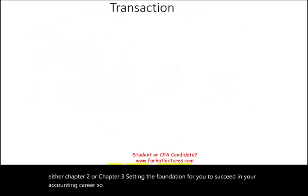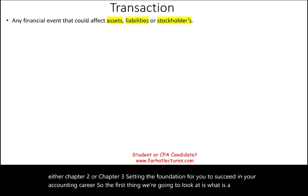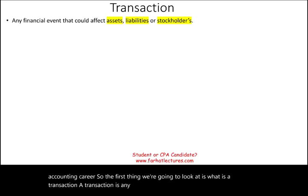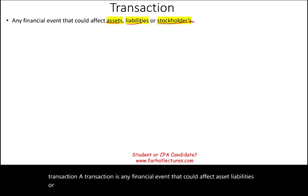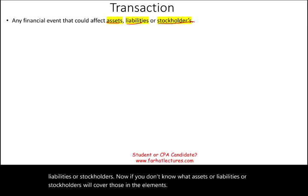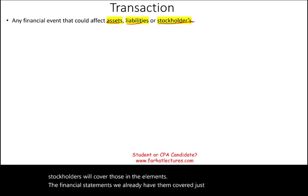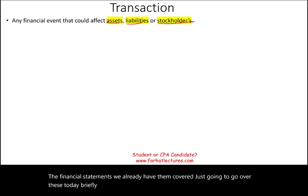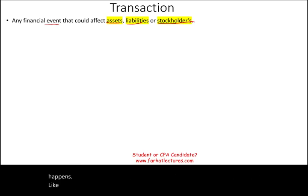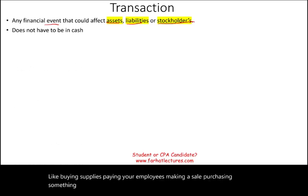The first thing we're going to look at is what is a transaction. A transaction is any financial event that could affect assets, liabilities, or stockholders' equity. An event is something that happens — like buying supplies, paying your employees, making a sale, or purchasing something on credit. It doesn't have to be in cash.